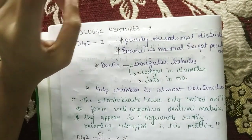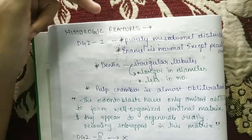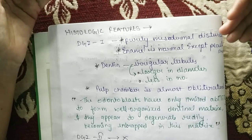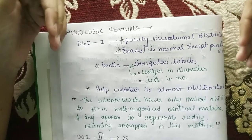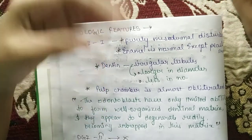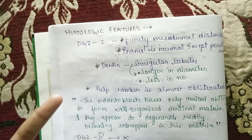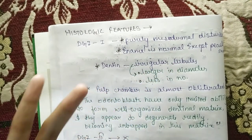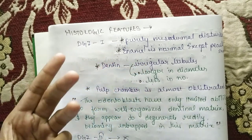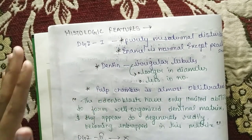One question commonly asked in viva: what is the shell tooth, and what is the capadon tooth? Shell tooth is type 3 in the Shields classification. In the revised classification, type 2 can also be asked. In the Shields classification: type 1 is the patient having osteogenesis imperfecta, type 2 is the patient who does not have osteogenesis imperfecta, and type 3 is the shell tooth. Shell tooth appearance occurs because of multiple pulpal exposure.